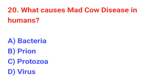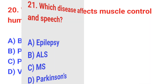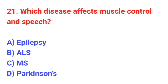Question number 20: What causes Mad Cow disease in humans? The correct answer is B: Prion. Question number 21: Which disease affects muscle control and speech? The correct answer is B: ALS.